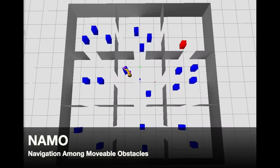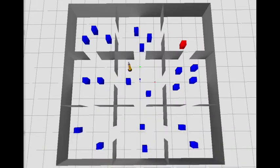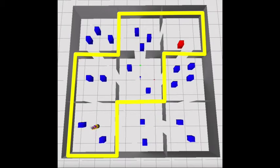For example, consider the NAMO, Navigation Among Moveable Obstacles domain. The agent must reach the red object moving obstacles along the way. If the agent imposes a state constraint that forbids itself from entering certain rooms, then it no longer needs to consider plans that enter those rooms.